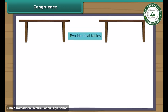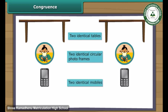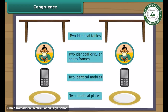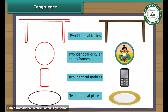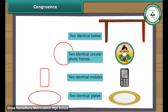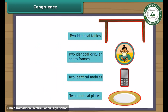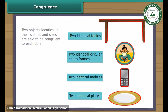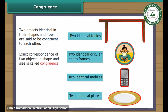Look at these objects. What strikes you about them? Yes, you are right — they are identical. Let us look at some more identical objects. We will now perform an activity with these objects. First, we draw their outlines and then remove the objects. Next, we slide the outlines of each pair of identical objects one over the other. The outline at the bottom is invisible — it merges with the outline on the top exactly. Two objects identical in their shapes and sizes are said to be congruent to each other. Exact correspondence of two objects in shape and size is called congruence. This is the symbol of congruence.